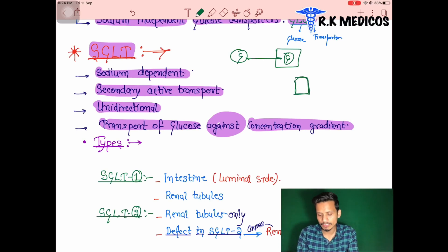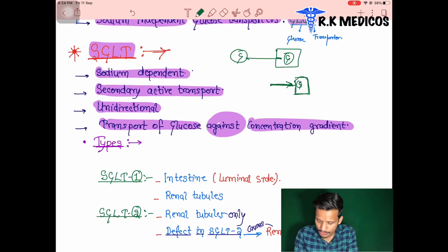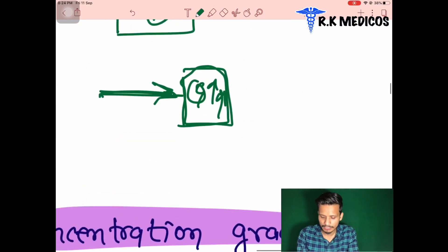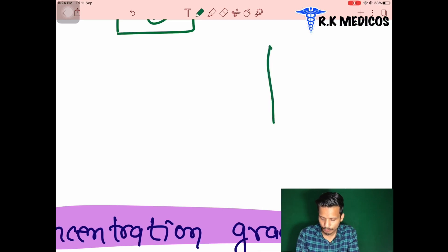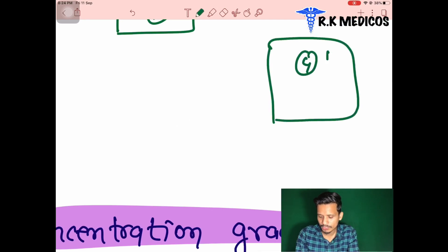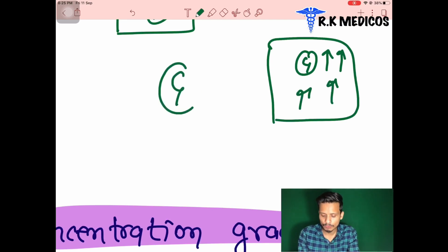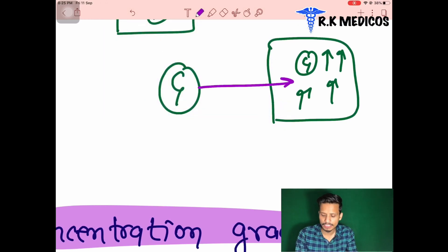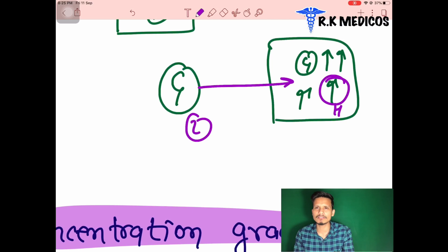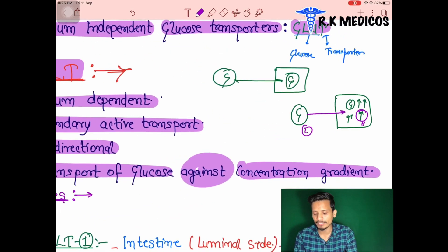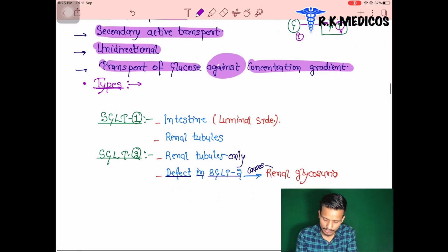When transporting against the concentration gradient, energy is required. Suppose glucose is higher in amount inside the cell — concentration gradient is higher inside and lower outside — but we are still adding glucose inside, working against the concentration gradient. That is the main working principle of the SGLT pathway.